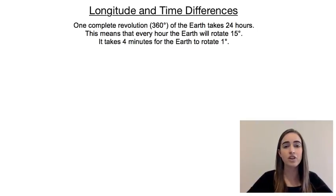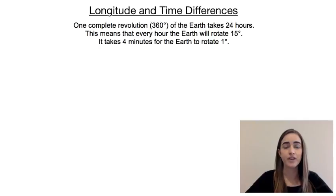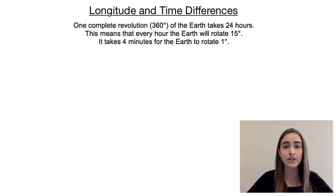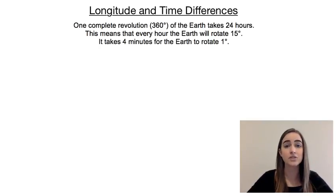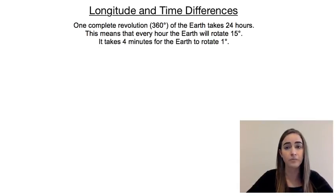In this video, I want to have a look at time differences and how that relates to longitude. We know that one revolution of the earth — a full 360 degree turn — takes one day, it takes 24 hours. Knowing that, we can figure out how far it turns in one hour.